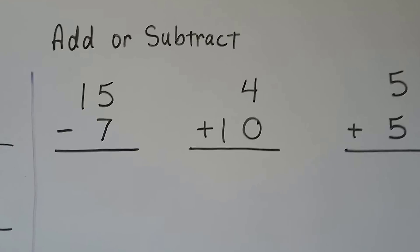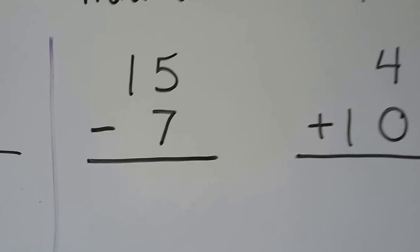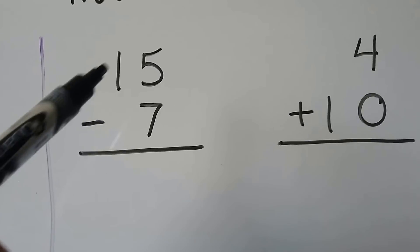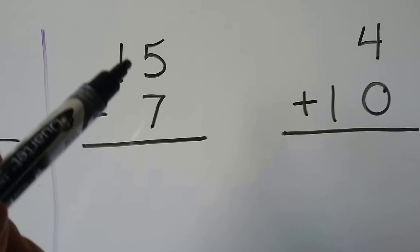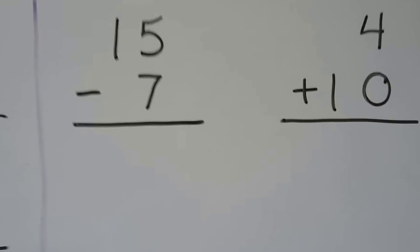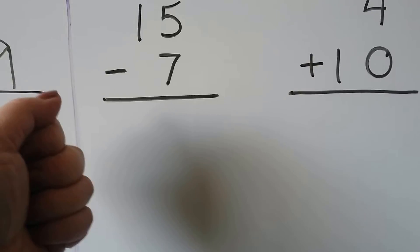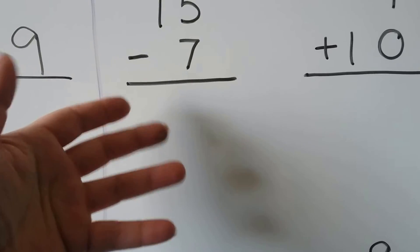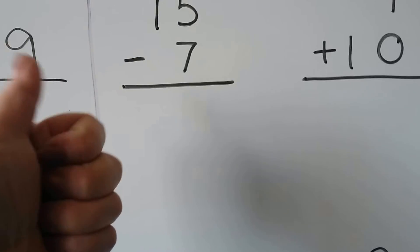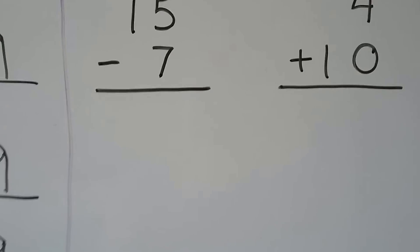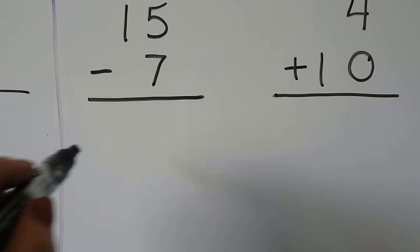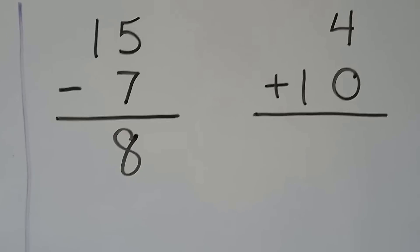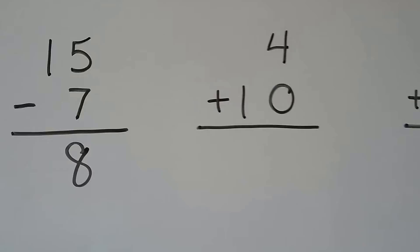We can add or subtract when they're stacked. 15 minus 7 — we can either start at 15 and count back 7, or we can start at 7 and count up to 15: 7, 8, 9, 10, 11, 12 — that's 5 — 13, 14, 15 — so that's 8. If I was using both of my hands you would have seen 8 fingers, but I'm stuck holding the camera.